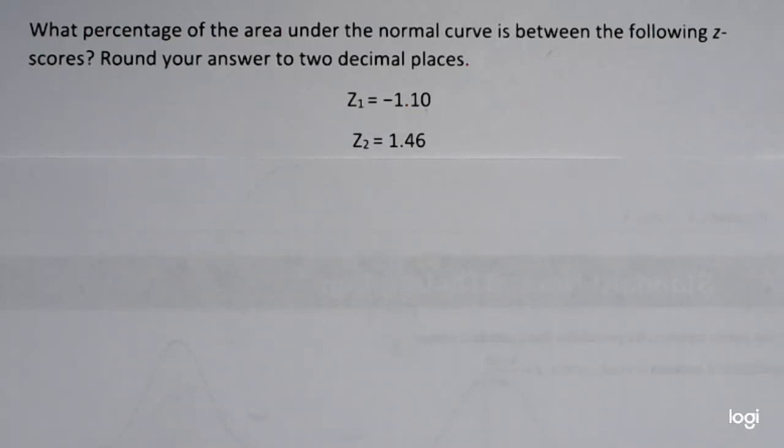This video is an example of finding a percentage of area under the standard normal curve. What percentage of the area under the normal curve is between the following two z-scores? My first z-score is negative 1.10 and my second z-score is 1.46.